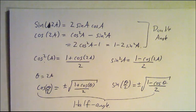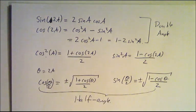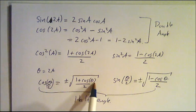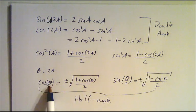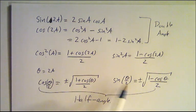For example, if you know the sine of 30 degrees, you can figure out the cosine of 30 degrees. And if you know the cosine of 30 degrees, you can figure out the cosine of 15 degrees and the sine of 15 degrees.